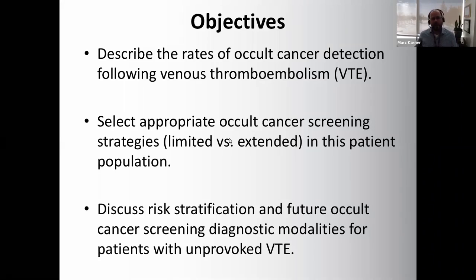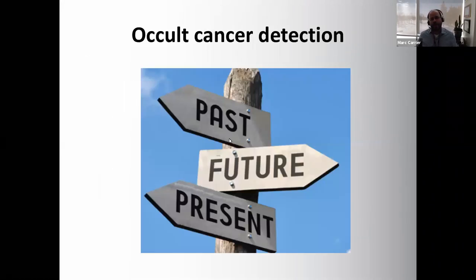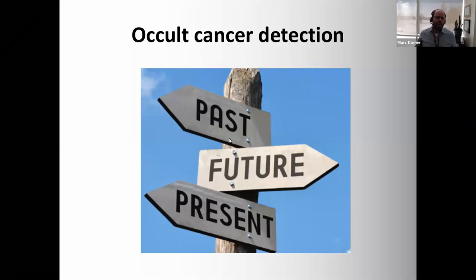To have a good understanding of occult cancer detection in patients with venous thromboembolism, it's important to look at the past — what types of rates and screening strategies were used — because the past is modulating what we do in the present. Then we'll look at recent data, current clinical practice guidelines, and then the future: what trials are coming, what are the next steps, and for which patient populations.